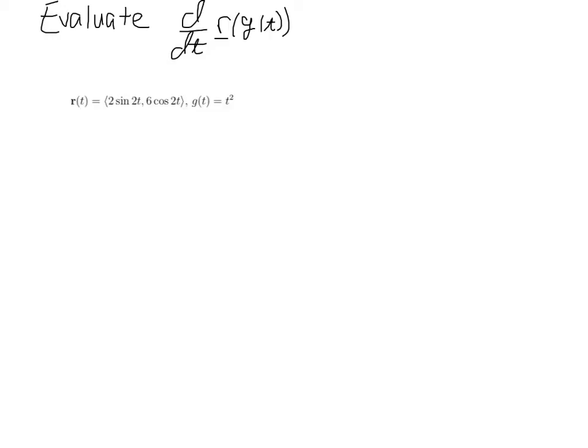Recall that the chain rule states that we take the derivative of the outside function and then we evaluate it at g of t. Then we multiply that by the derivative of the scalar-valued function, which we sometimes just call the inside function.